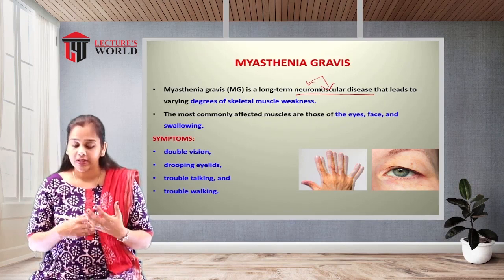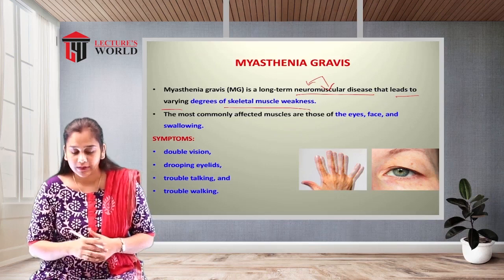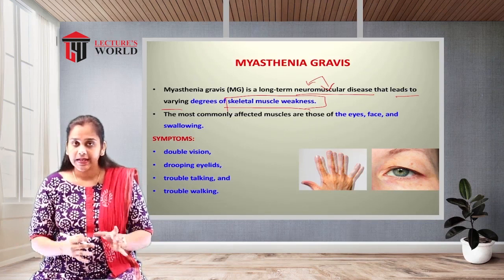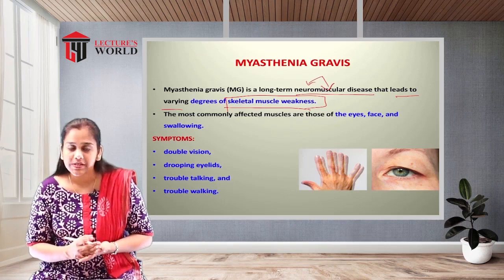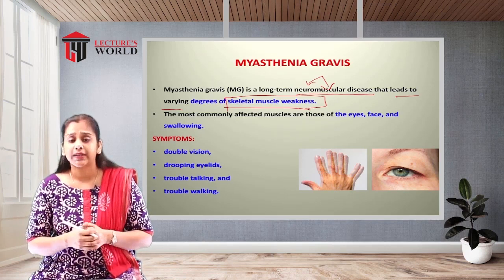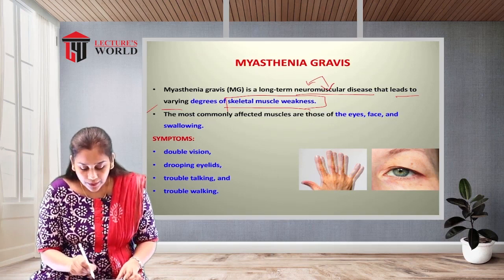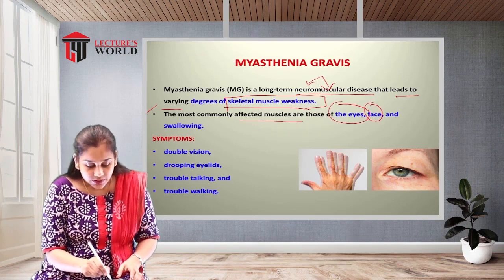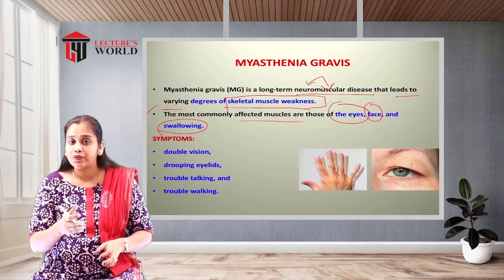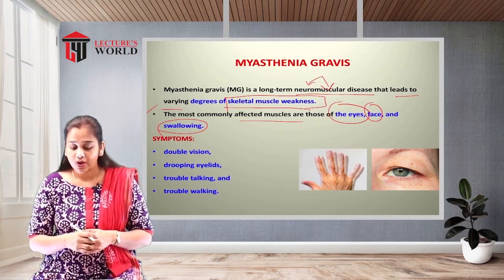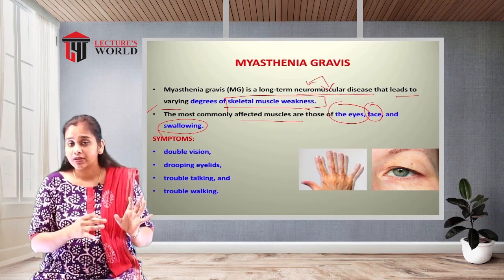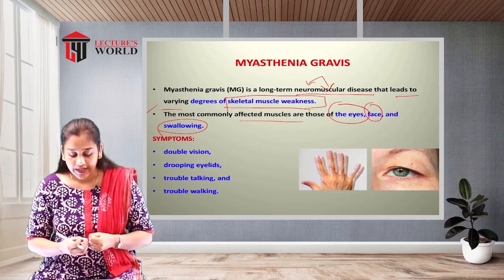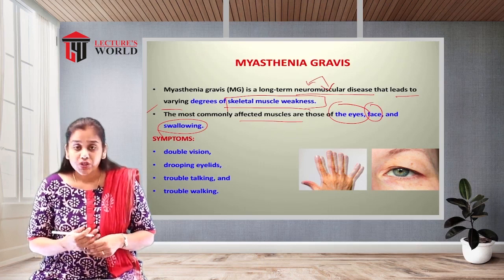Myasthenia gravis leads to varying degrees of skeletal muscle weakness, and because of this skeletal muscle weakness, neuromuscular problems arise. The most commonly affected muscles are those related to the eye, face, and swallowing — the muscles of these structures become weaker.